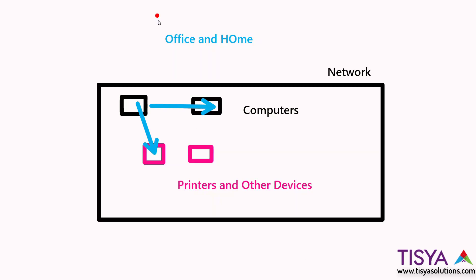This network is typically a private network. A network can be categorized as private or public. A public network is a network of computers which can access each other over the internet, whereas a private network is one that is wholly within itself — outside computers cannot reach it.